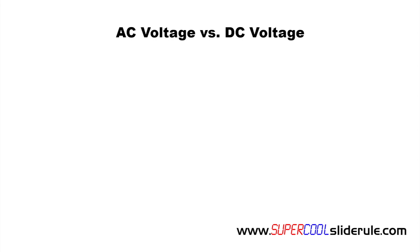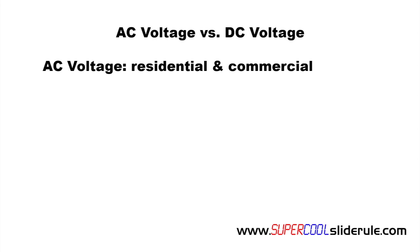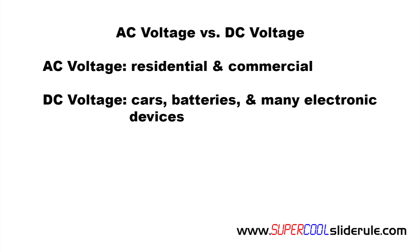We begin by first determining if we are testing AC voltage or DC voltage. AC voltage is what is used in virtually all residential and commercial applications. DC voltage is what cars, batteries, and many electronic devices rely on. In this example, we will be testing AC voltage.